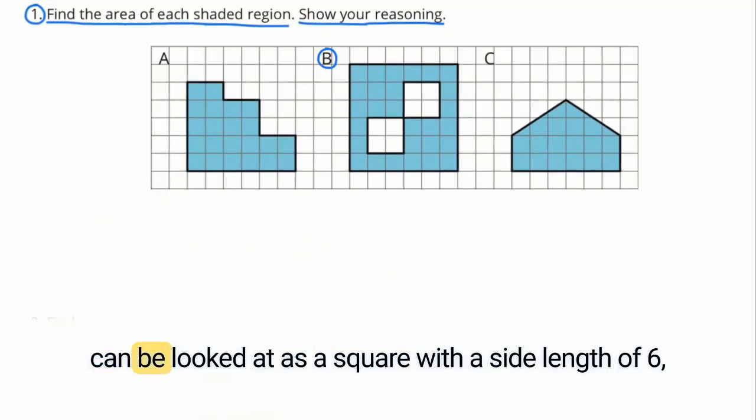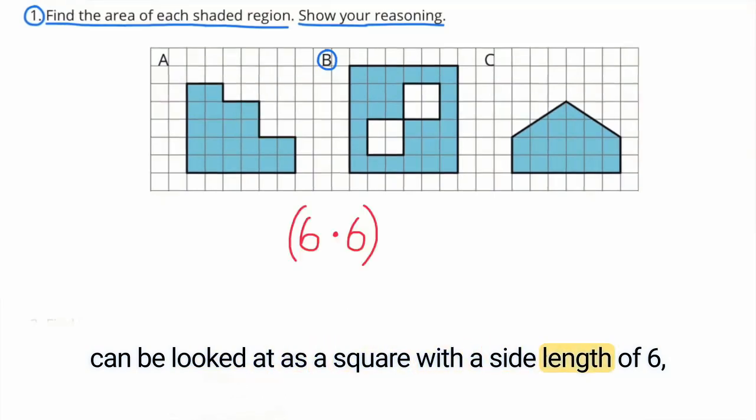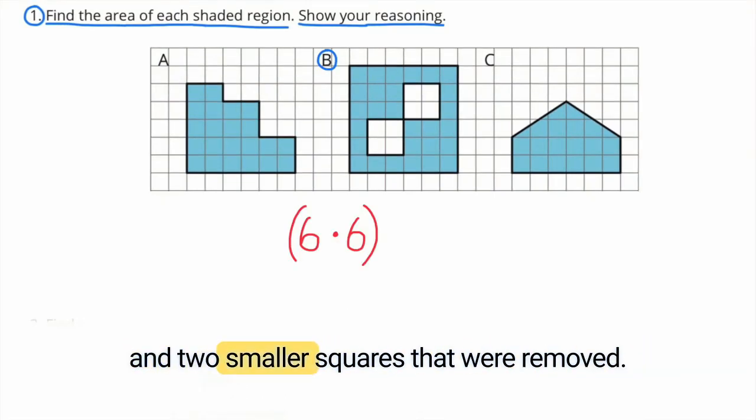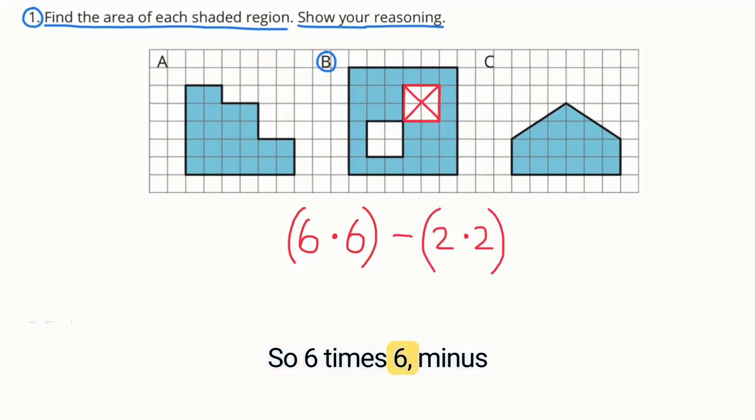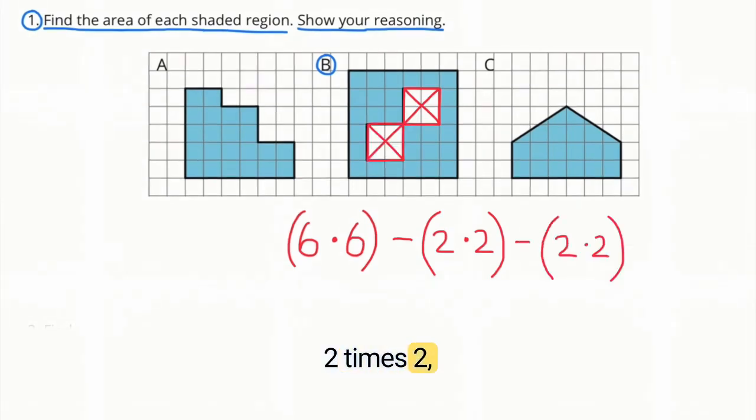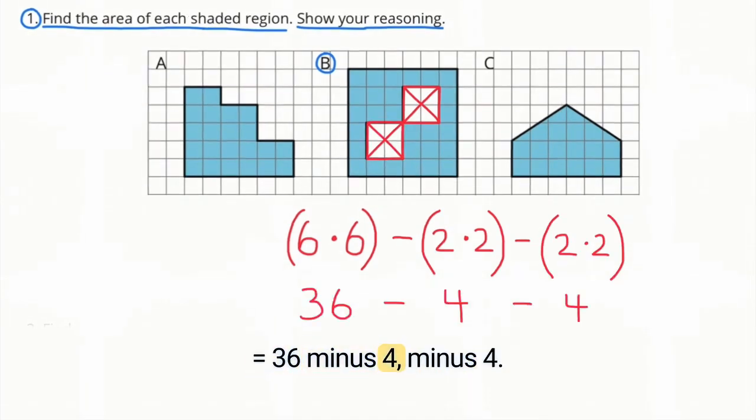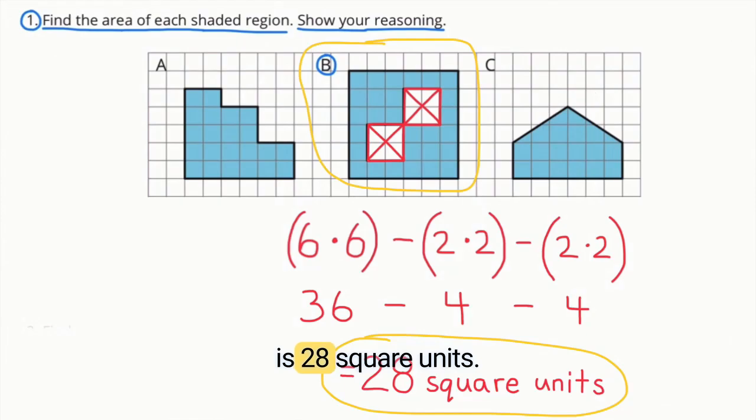B. This shape can be looked at as a square with a side length of 6 and two smaller squares that were removed. So 6 times 6 minus 2 times 2 minus 2 times 2 equals 36 minus 4 minus 4. The area of B is 28 square units.